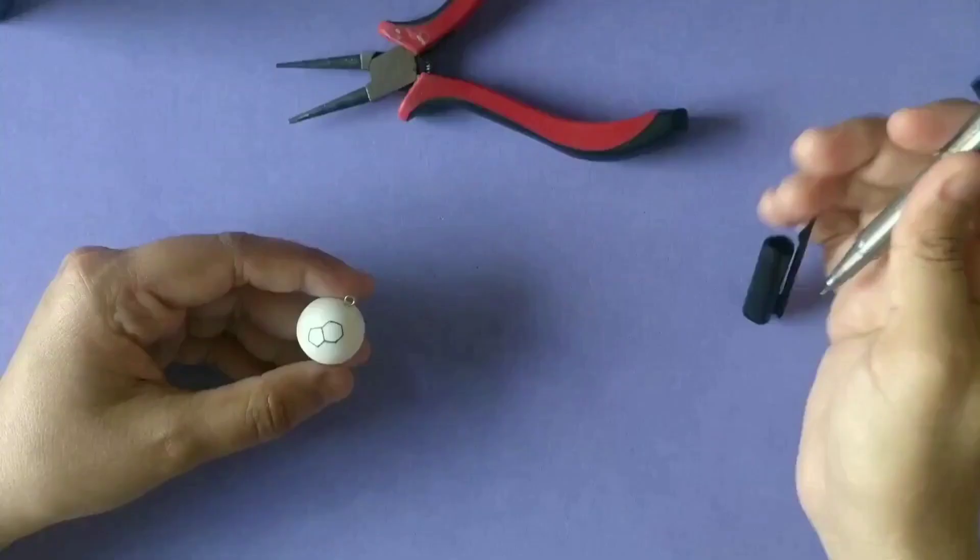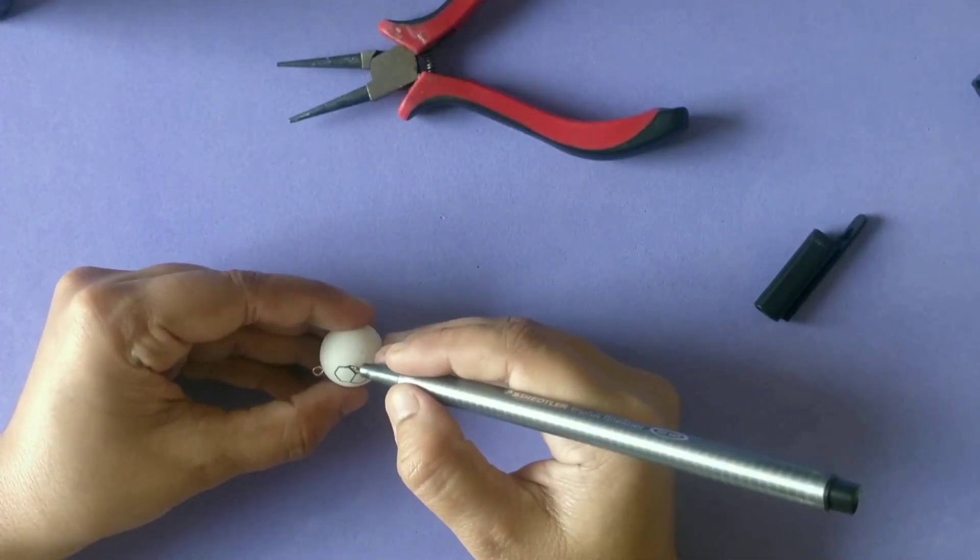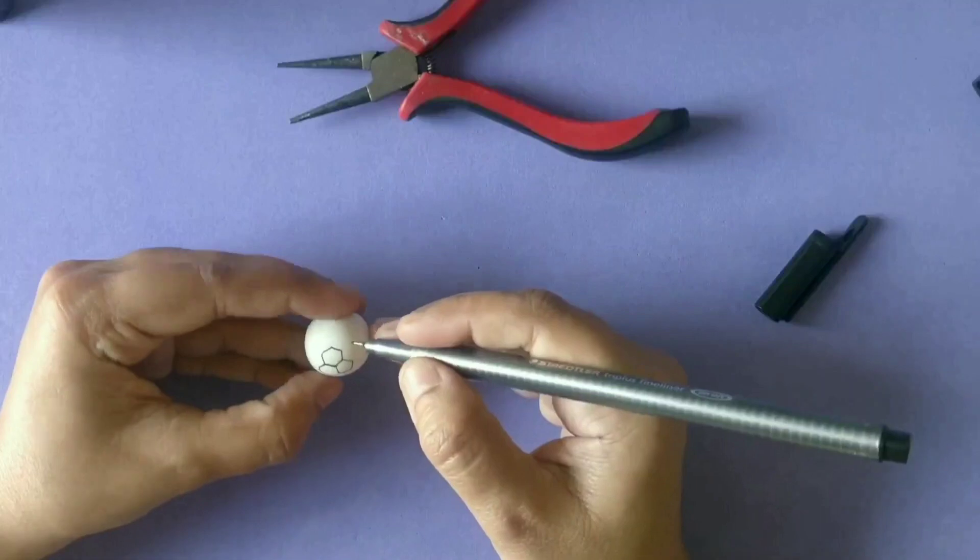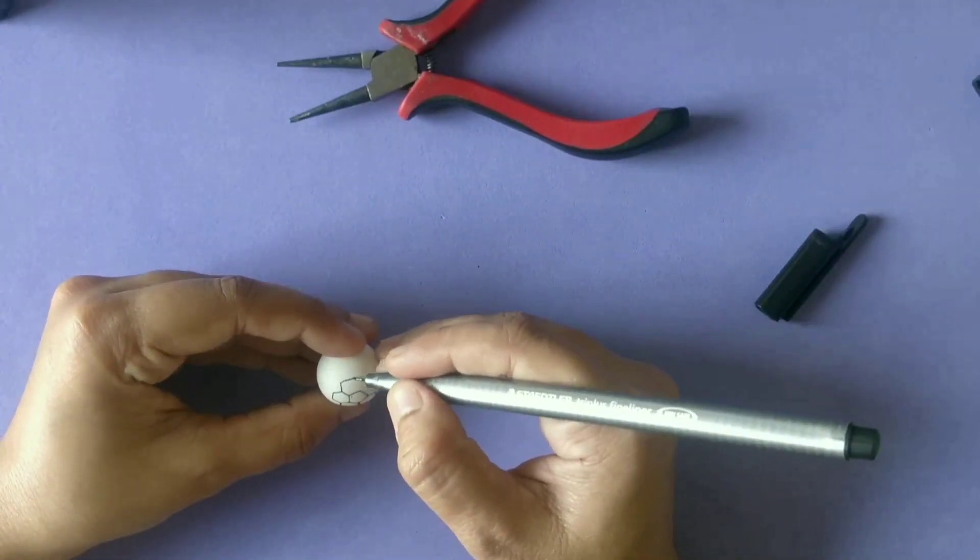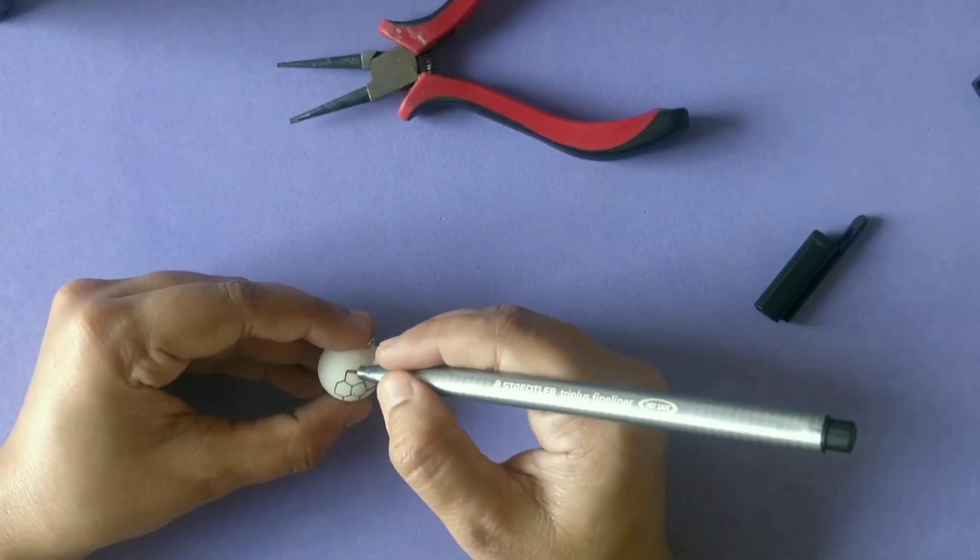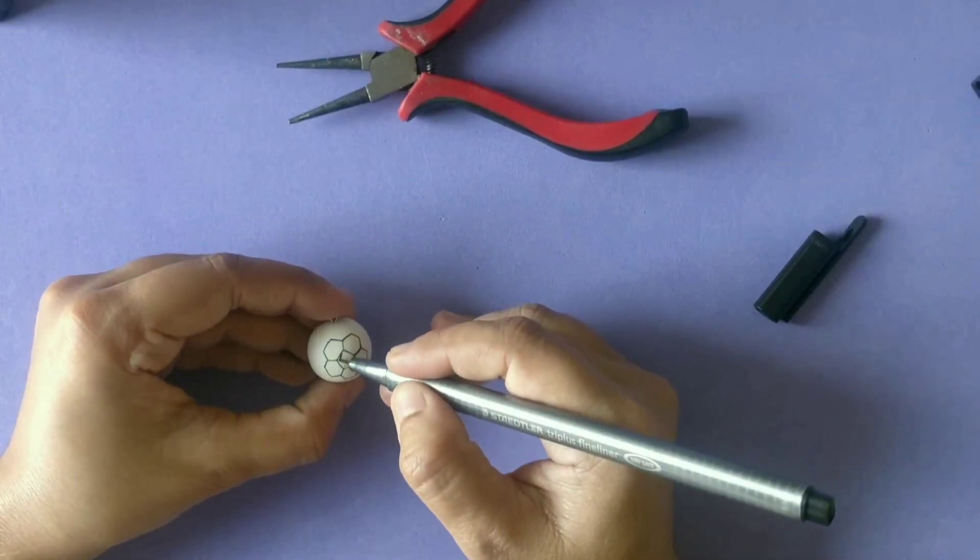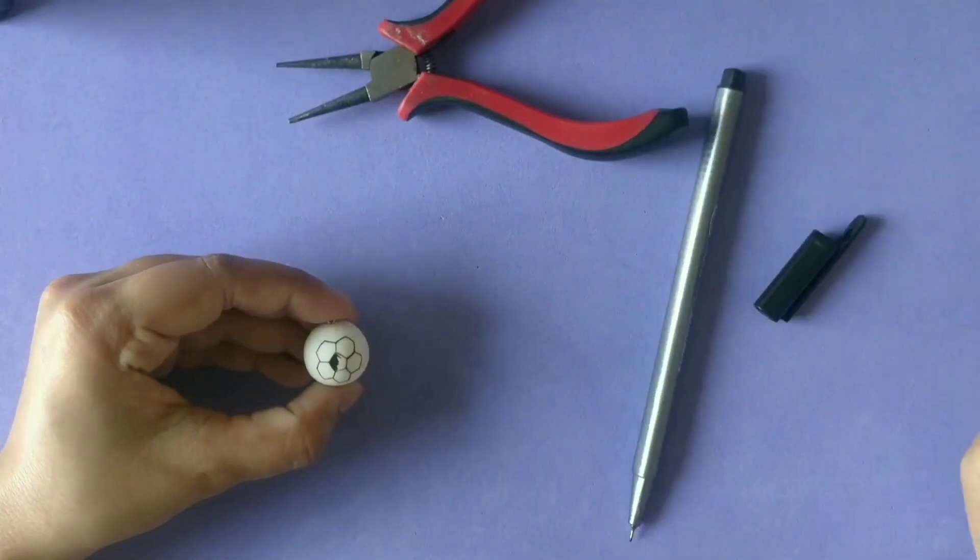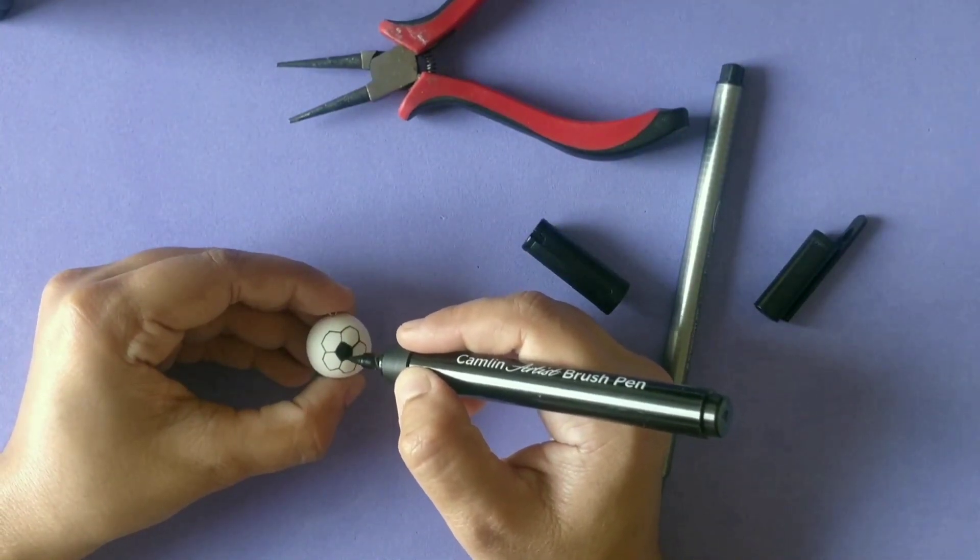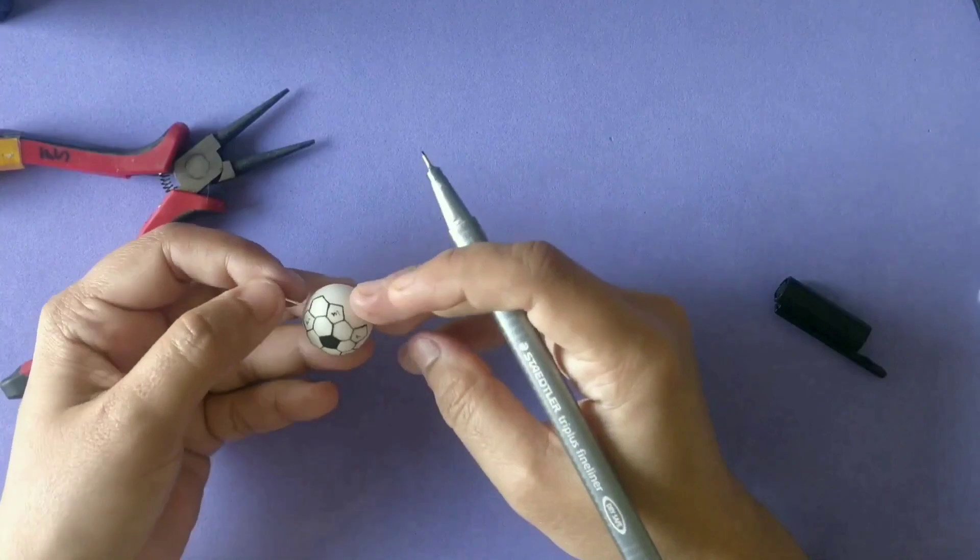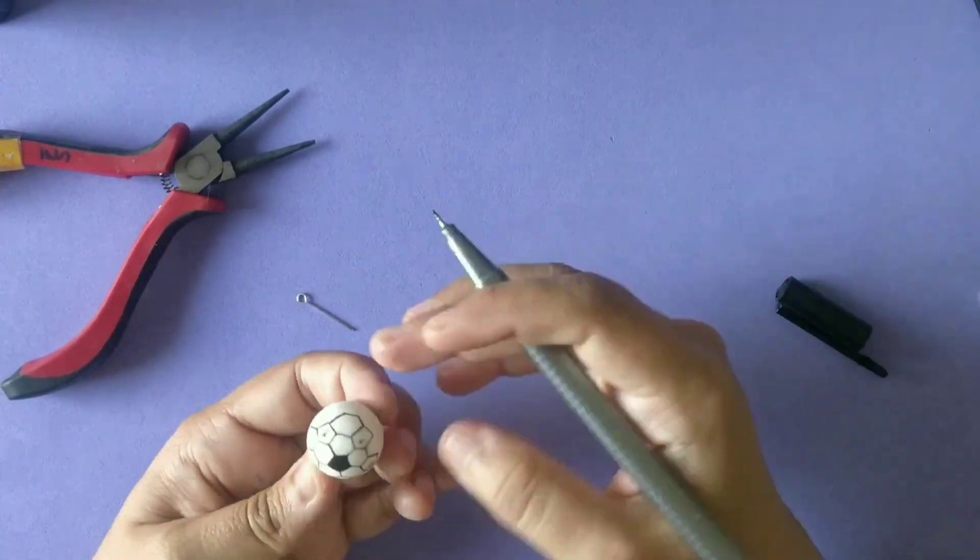So coming back to today's project, I have just created a white ball out of white clay. I have taken a real football pattern reference here and then trying to make the outlines. I started drawing the outline directly with a pen here, but I would request all of you to do it with pencil first.